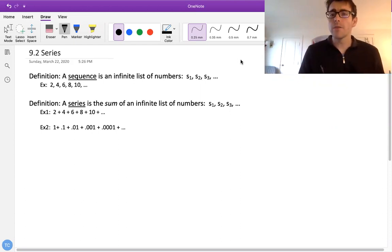We just finished talking about how a sequence is an infinite list of numbers. So for example, 2, 4, 6, 8, 10, 12, etc.